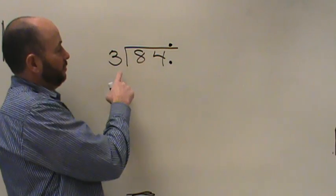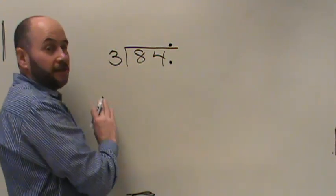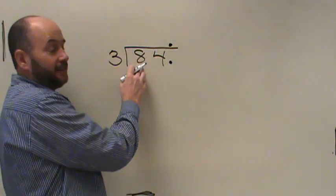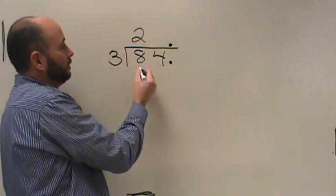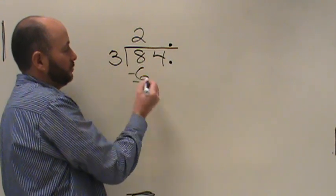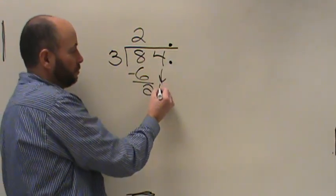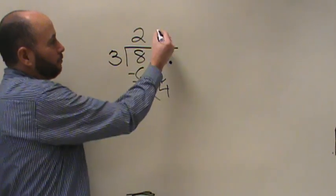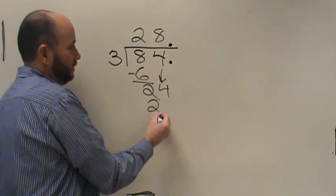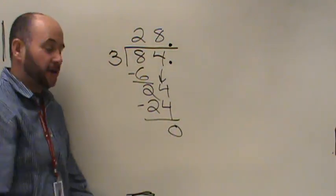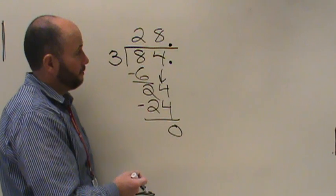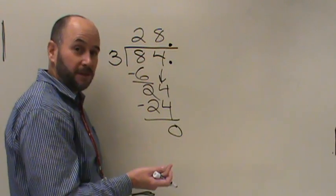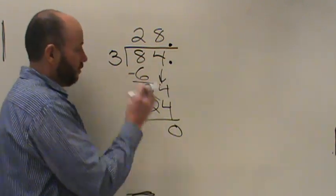Our problem is now simply 84 divided by 3. Ask yourself how many times will 3 go into 8 — 2 times. 2 times 3 is 6, subtract and you end up with 2. Then 3 into 24 would be 8 times. 8 times 3 is 24, subtract, and you have a terminating decimal. Sometimes they won't terminate and you'll have to round, or they'll repeat and you'll have to indicate that. That's how you do them.